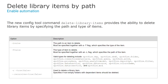We already support deleting library items by unique global ID, but now the new config tool command delete library items provides the ability to delete items by specifying the path and the type of items. This means that you can do batch removals of certain types — or all types — from a directory, recursively. Much easier to handle delivery.